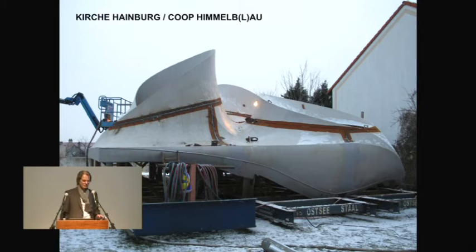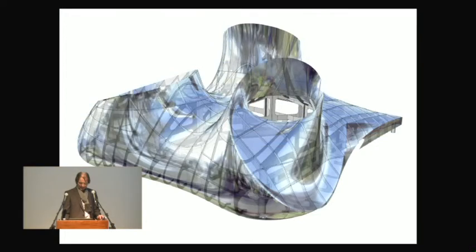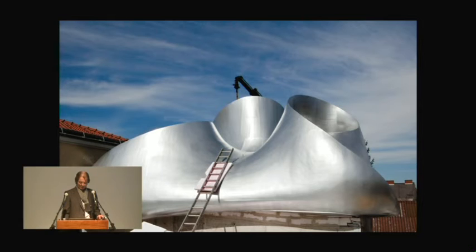This is a small cloud — but I love it, and Wolf loves it very much. It's a church in Austria, in the hometown of Wolf Prix, built like a ship by Ostsee Stahl, which is a shipyard in Germany, with bent steel.